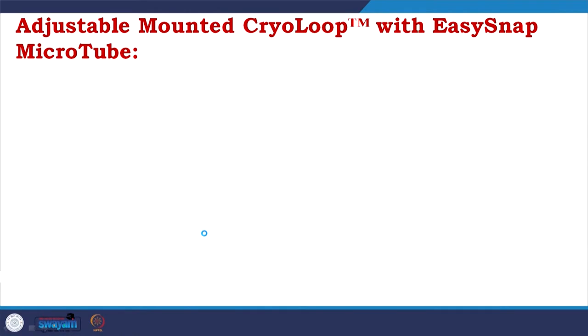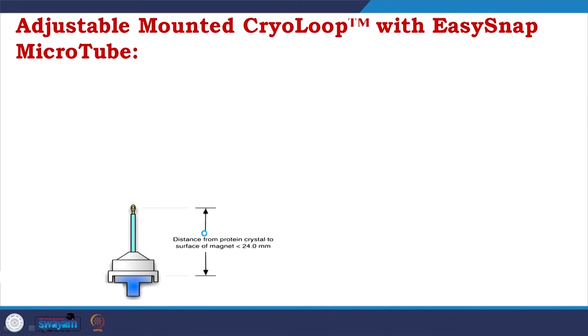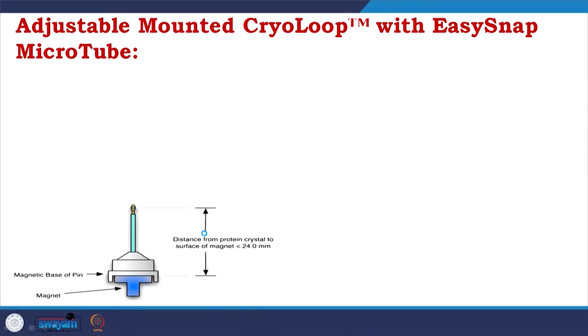An adjustable mounted cryo loop with easy snap microtube — this is what an ideal cryo loop is. The function of the cryo loop: you have a crystal and you have to spoon it out. These are your spoons. They have a magnet which has to go and attach to the wand and tong. The components are: the magnetic base of the pin, the microtubing, the neck of the loop, and the loop itself — which is the most important part.